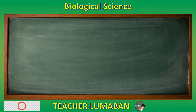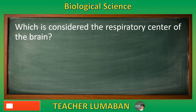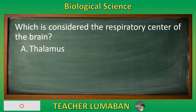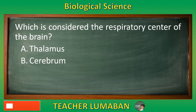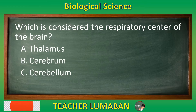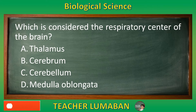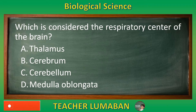Which is considered the respiratory center of the brain? Letter A: Thalamus. Letter B: Cerebrum. Letter C: Cerebellum. Letter D: Medulla oblongata. Choose the suitable answer based on the given choices in 5 seconds.